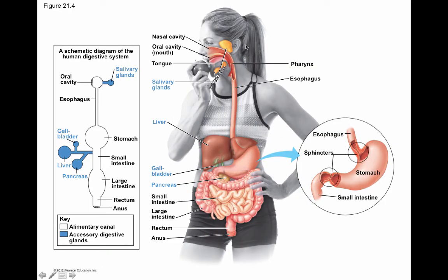In our human alimentary canal: we have the mouth, then a pharynx and esophagus leading into the stomach, then the small intestine for absorption and breakdown of food, the large intestine primarily for water absorption, and then the rectum for storage of feces and the anus to exit. There are also accessory organs that secrete different enzymes and molecules to help break down food.